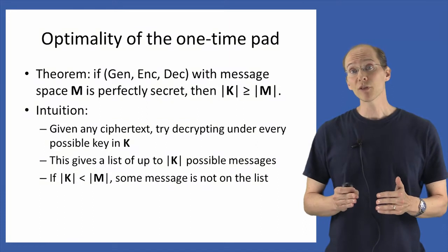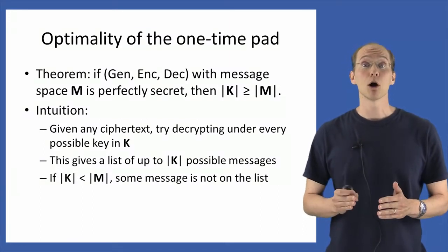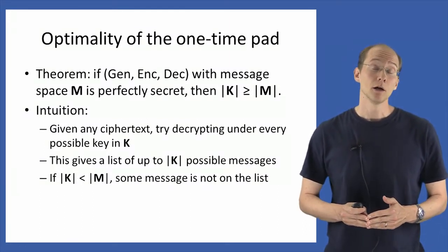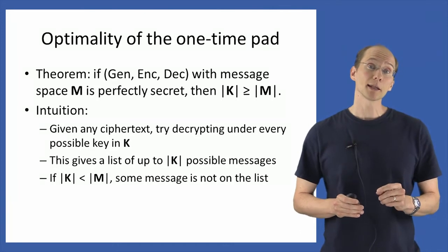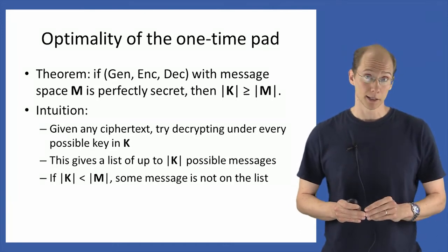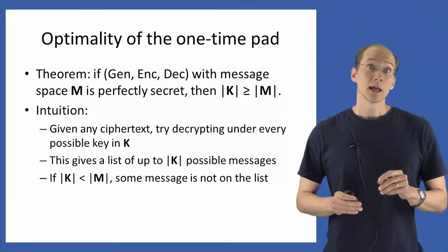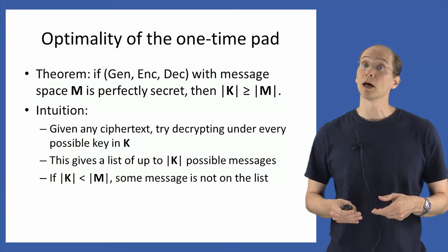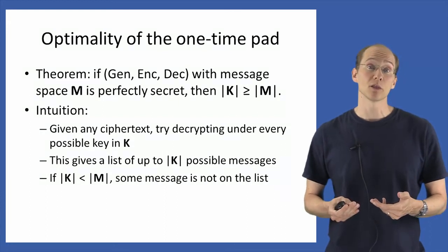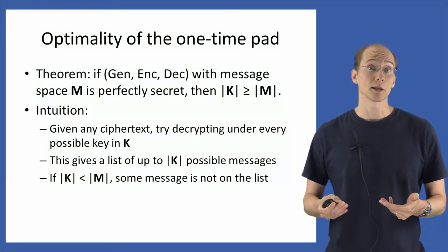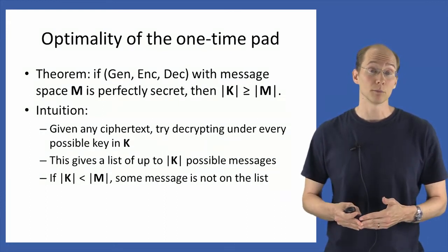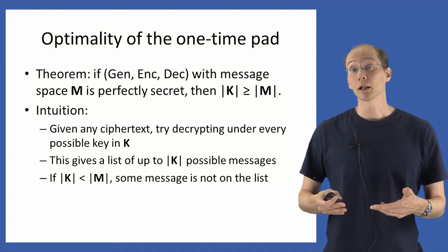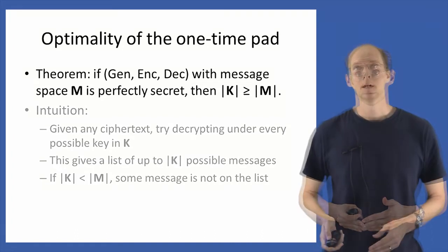Now if the size of the key space is smaller than the size of the message space, then there is some message not on that list. If a message is not on the list, it means that message could not possibly have been the one the parties encrypted and wanted to communicate, and that's already a leakage of information to the attacker.